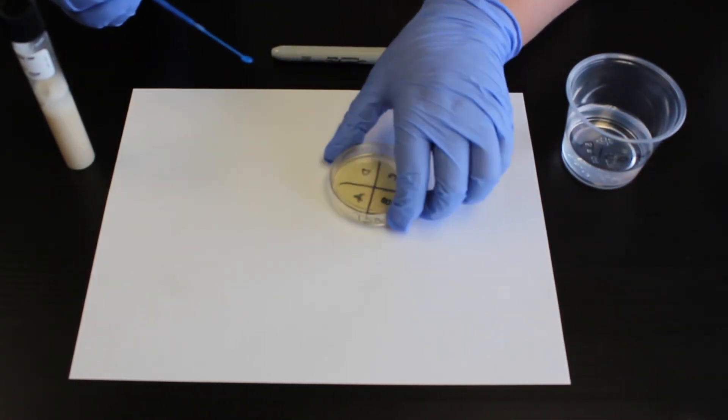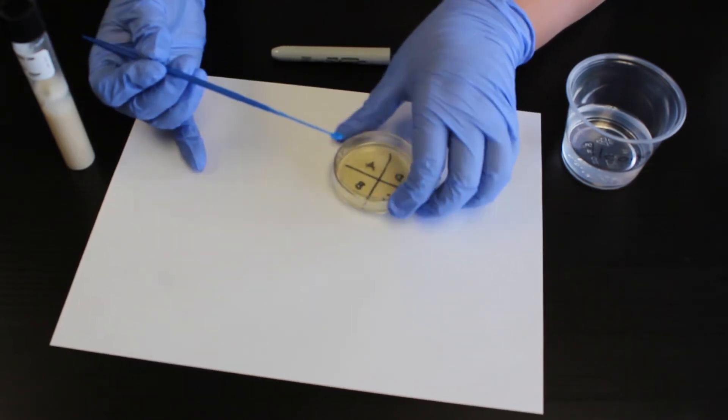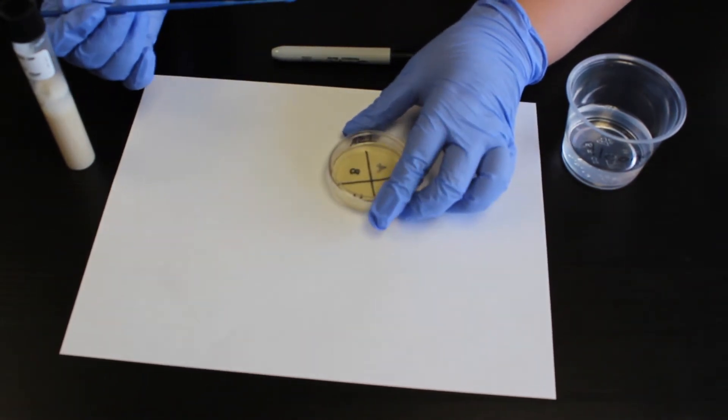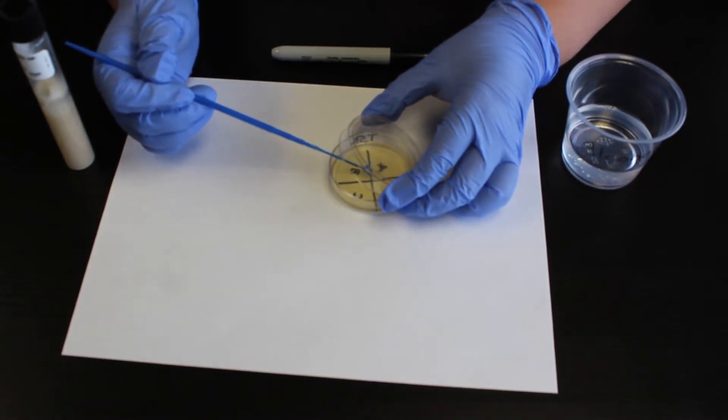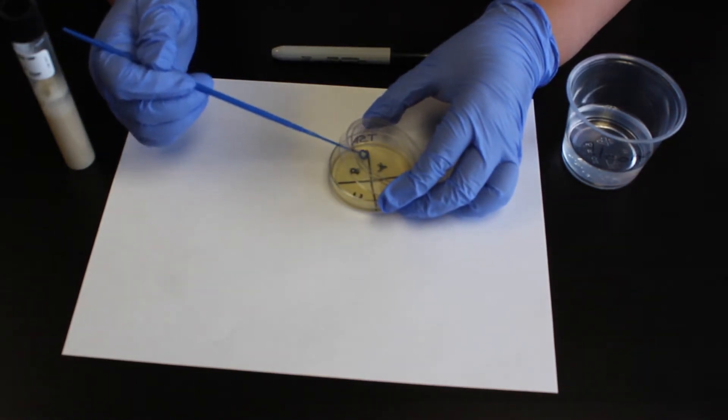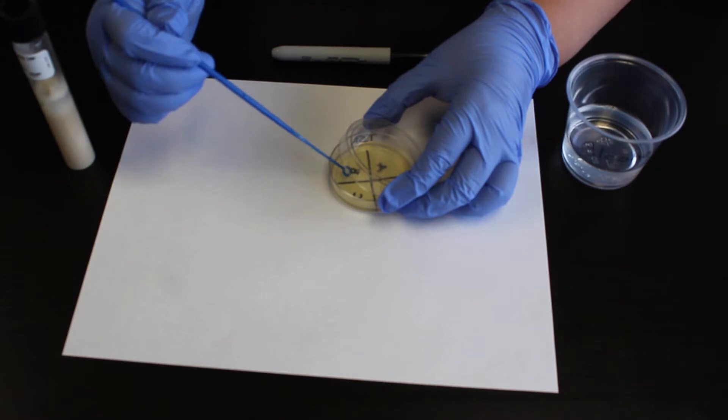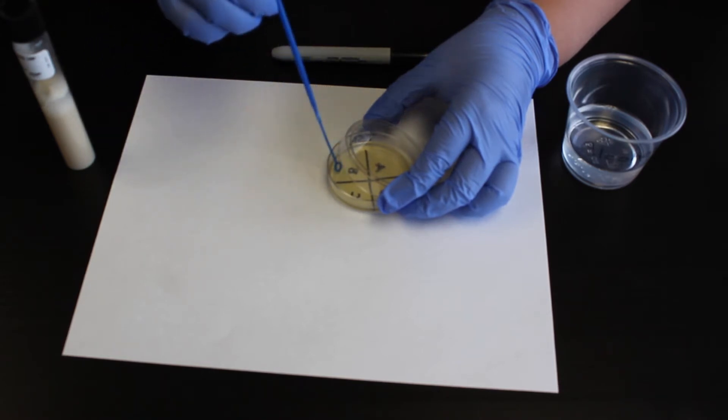While holding the sterile loop in the dominant hand, grasp the agar plate with the other hand, tilting the lid such that a one centimeter space is open above the B quadrant. Pass the loop over the bottom corner of the A quadrant before streaking the B quadrant.